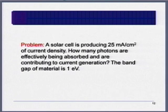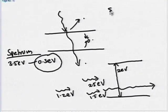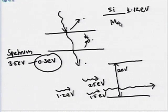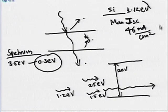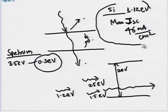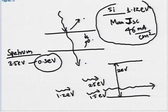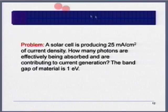Lower band gap means higher current you can get. For silicon with a band gap of 1.12 eV, the upper limit of JSC is about 46 mA/cm². Never in the world will you achieve a current density higher than 46 mA/cm² for silicon — that is the absolute highest possible value. You can find the upper limit for any other band gap material similarly.